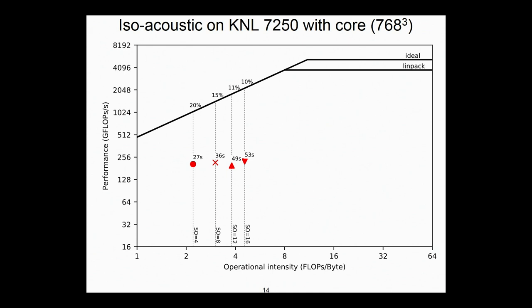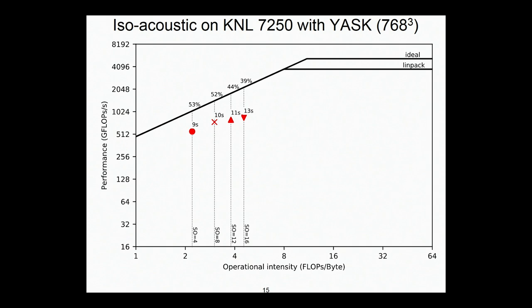This is the same thing now on the KNL with no change whatsoever to the code and no KNL-specific optimizations. Out of the box, without changing anything, we're getting about 10% of peak. But because we have integrated Yask into the back end, we use Yask then.